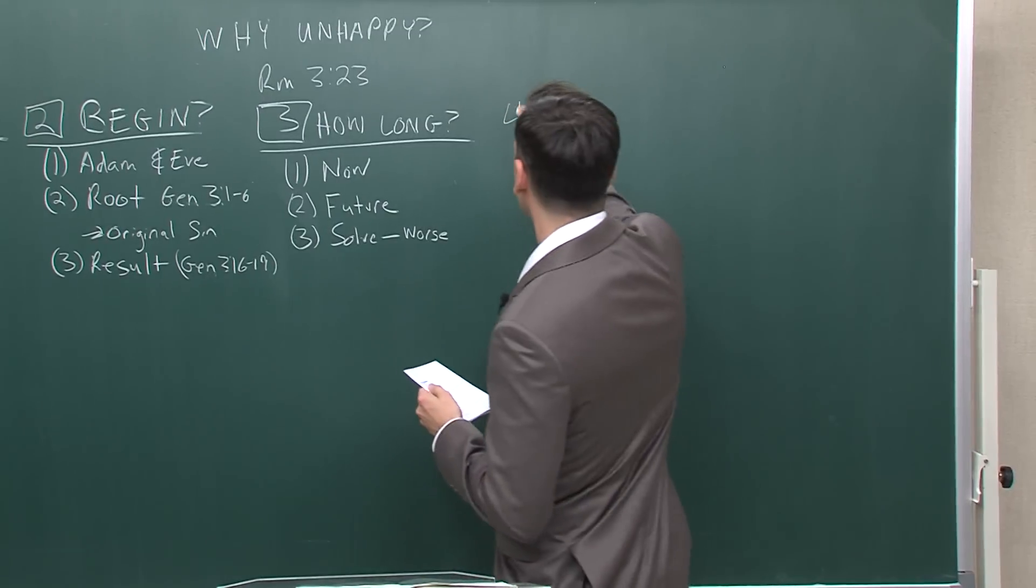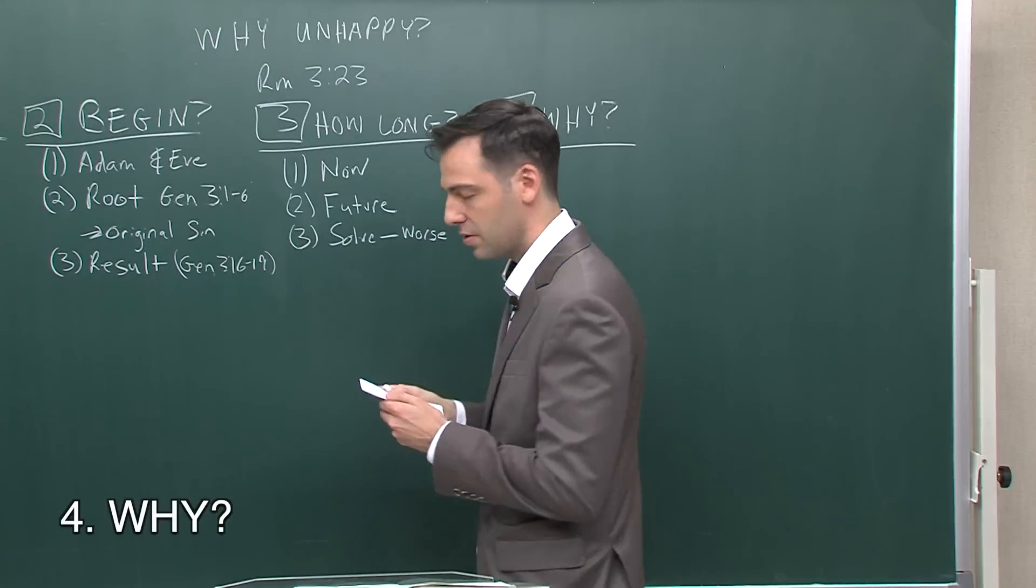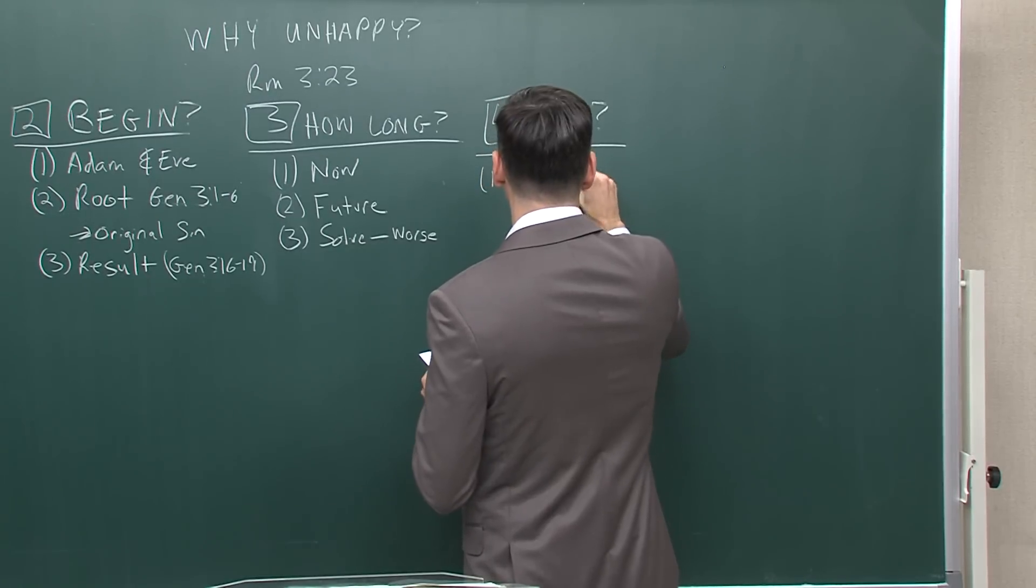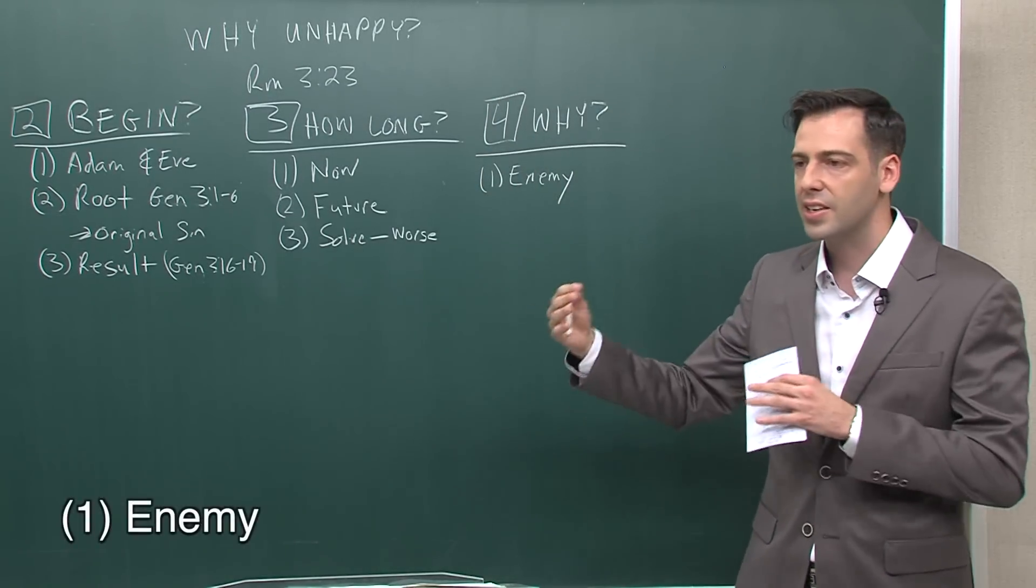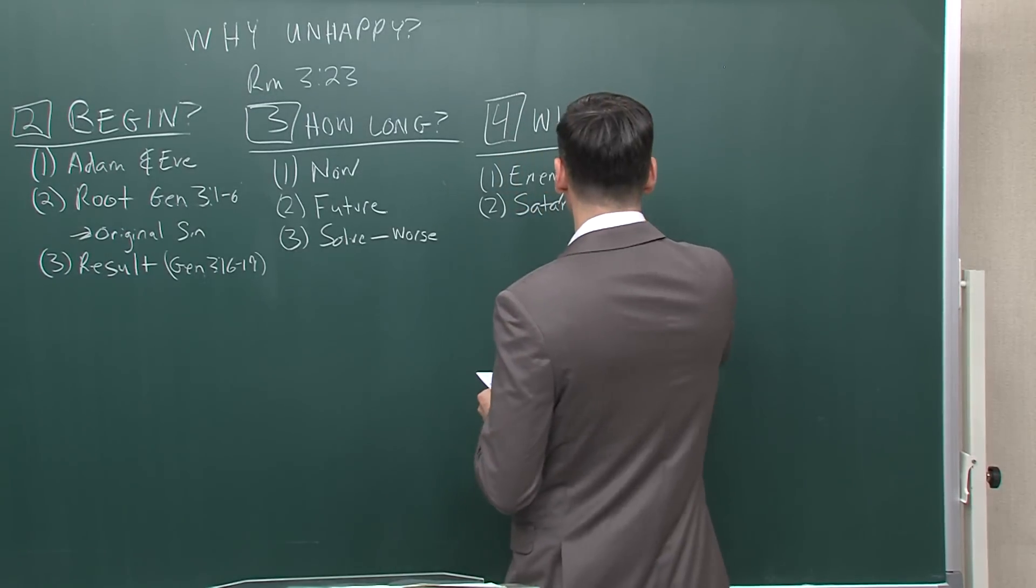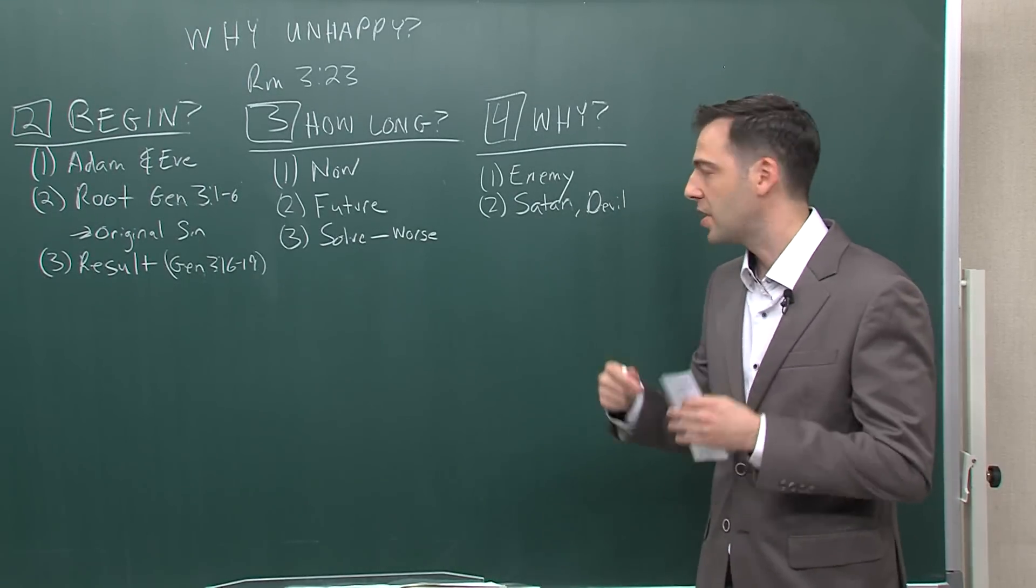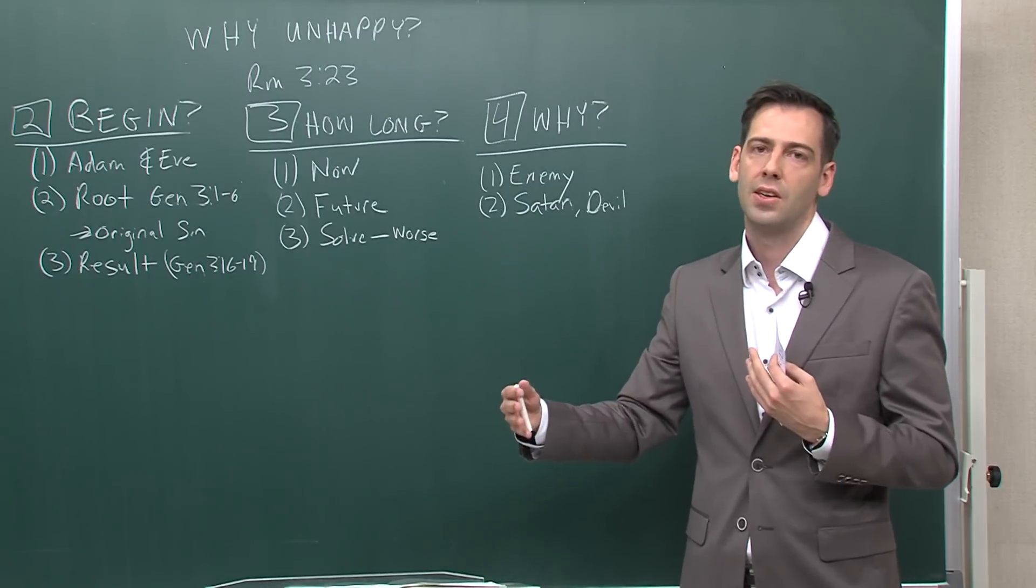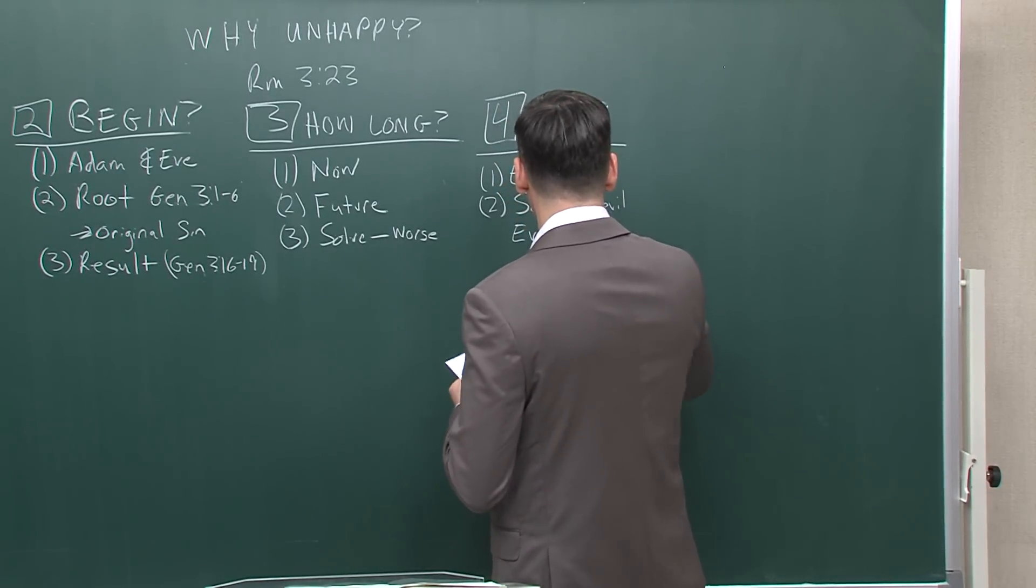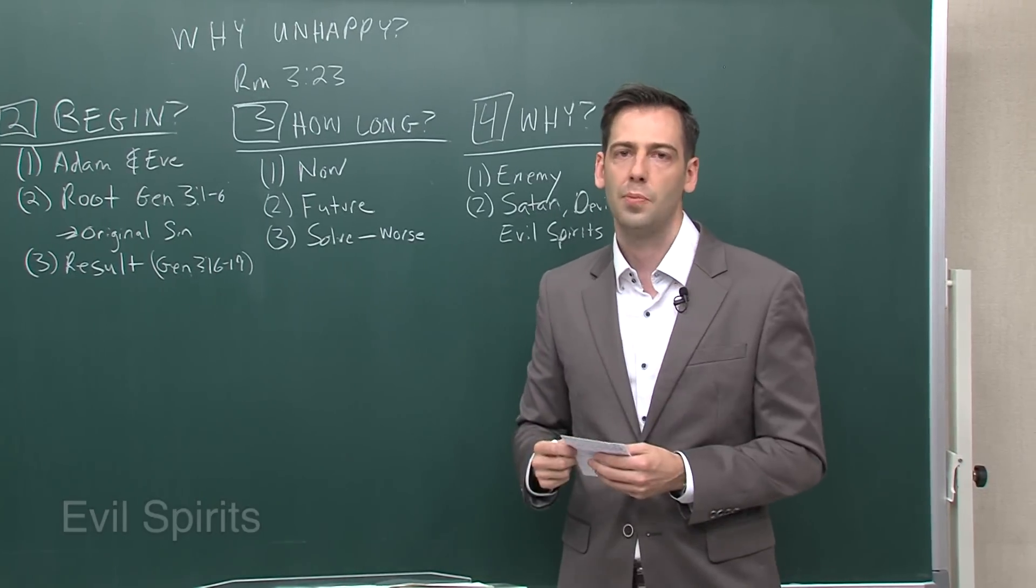And now we're going to look at number four, which is why doesn't this unhappiness go away? Why doesn't this unhappiness go away? And it is because we have an enemy working against us. We have something aiding in our unhappiness. And that person is called Satan or the devil. It is the adversary of God. And he brings us more and more unhappiness because his role is to separate us from God and to continue leading us down paths of destruction. And he also is not alone, but he has evil spirits, a legion of evil spirits that also aid him in corrupting us and destroying us and bringing us unhappiness.